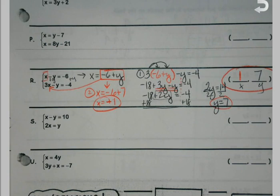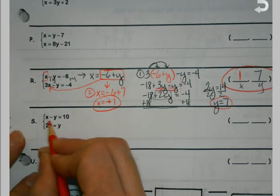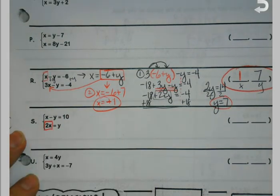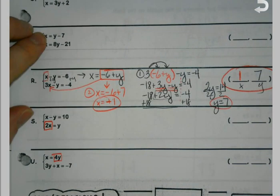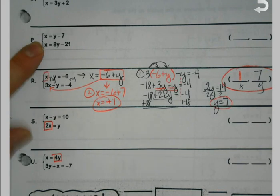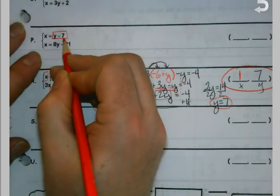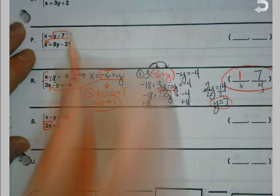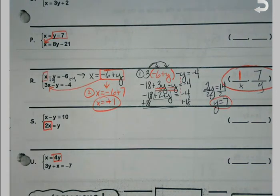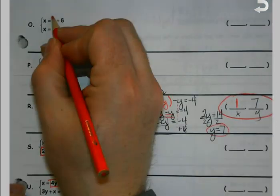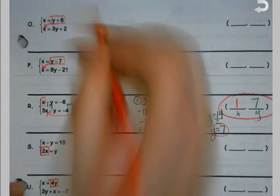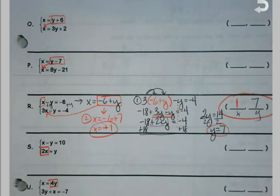But again, the key, if you see x or y equals somewhere, always box that in first. If there's the same variable and they're both, you're like, well, x equals on both of them. Just pick one, it doesn't matter, pick one and plug it into the other for that same variable. Just don't switch variables on me. They're both x equals, plug that in there, just like we did number 1 on the front.